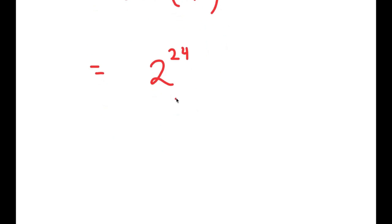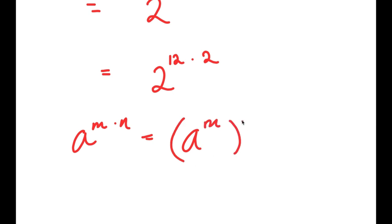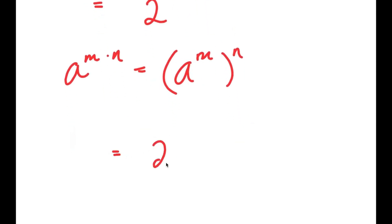Now from here, I'm going to write this as 2 to the power of 12 times 2. The reason I did this is because I can now use the property: a to the power of m times n is equal to a to the power of m to the power of n. So 2 to the power of 12 times 2 is equal to 2 to the power of 12 to the power of 2.